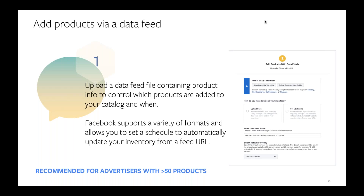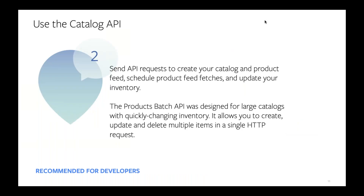We recommend feeds for advertisers with more than 50 products. We're also compatible with Google Shopping feeds, so you can take a feed you're using for Google and put it into Facebook pretty easily. The second option is to use our API, which allows you to create catalog products and product feeds, schedule fetches, and update inventory via a batch API. It's designed for large catalogs — we recommend it for advertisers who have a lot of products and whose inventory changes frequently. You can create, update, and delete many items within a single request.